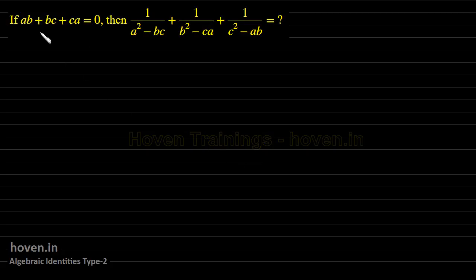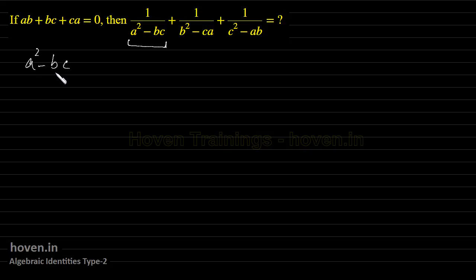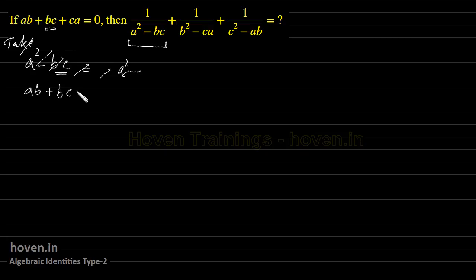Next question: if ab plus bc plus ca is equal to 0, then 1 by a squared minus bc plus 1 by b squared minus ca plus 1 by c squared minus ab is equal to what? We will work on a squared minus bc first. From the given identity ab plus bc plus ca equal to 0, we get bc equal to minus ac minus ab, which gives bc equal to minus a into b plus c.